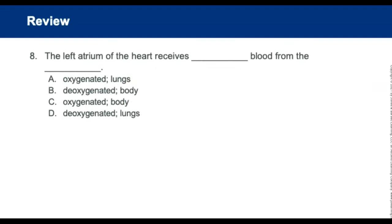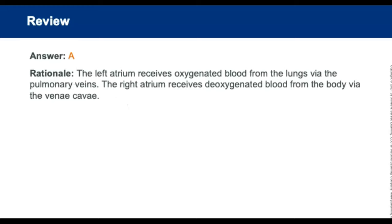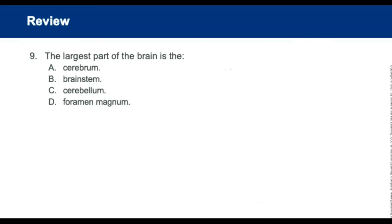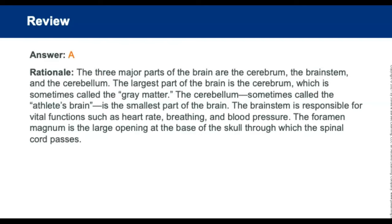The left atrium receives oxygenated blood from the lungs and pumps it out to the body — that is the high-pressure pump on the left side. The largest part of the brain is the cerebrum. The three parts of the brain are the cerebrum, brainstem, and cerebellum, with the largest being the cerebrum.